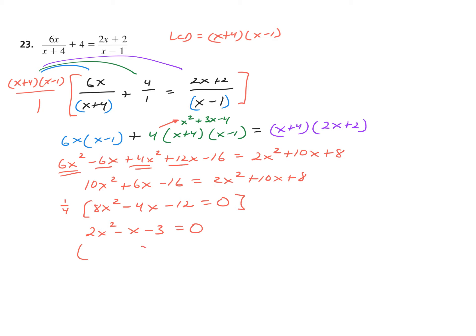I'm going to factor this mentally. And as I've said many times — if you cannot mentally factor, then don't; use product AC. I've got to have 3 and 1: the 3 goes here as minus, and the plus 1 pairs with the 2. Let's double-check: there's my 2X squared, there's my minus 3, and the outer-inners give me negative X, which I have. Skipping the multiplication property of zero, X gives me 3 halves and X gives me negative 1.